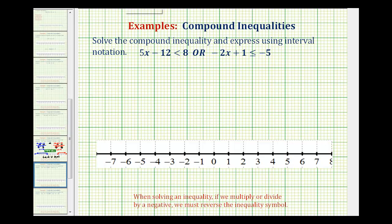So what we'll do is solve each of these individually and then graph both on the number line to interpret the results. So we'll first solve the inequality 5x minus 12 is less than 8.